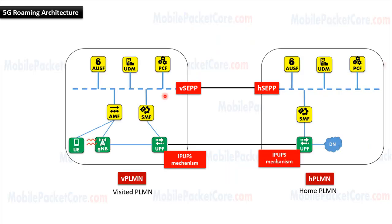In order to connect between the control plane in the visited network and the control plane in the home network, we use a node named SEPP, which is installed at the edge of the visited network and at the edge of the home network. While in order to connect between the user plane in the visited network and the user plane in the home network, we use a mechanism named IPUPS.